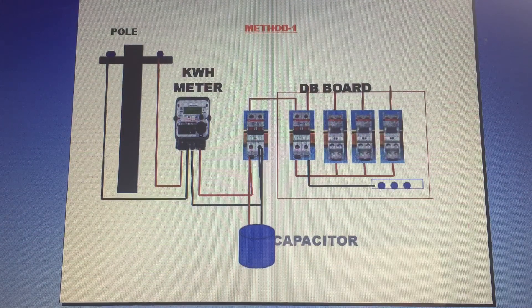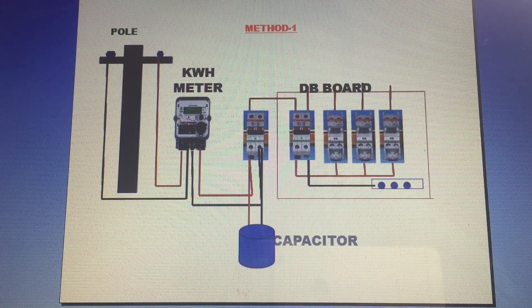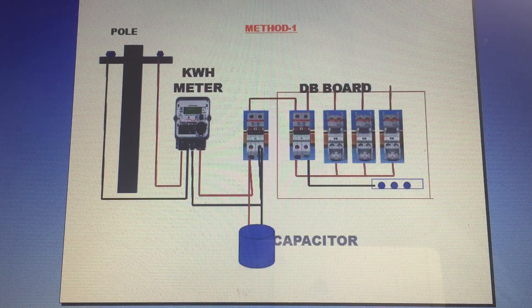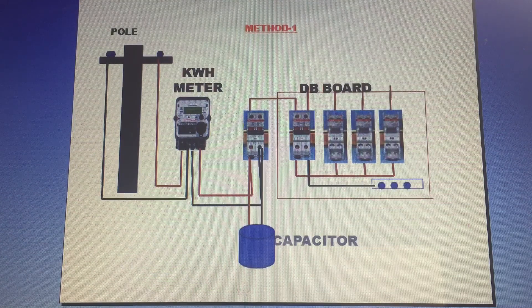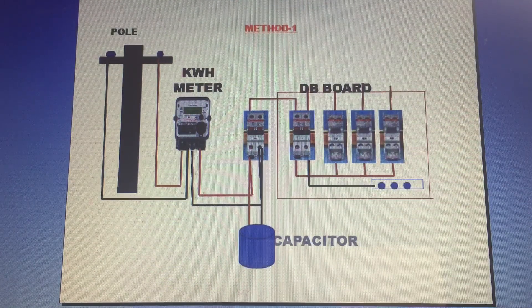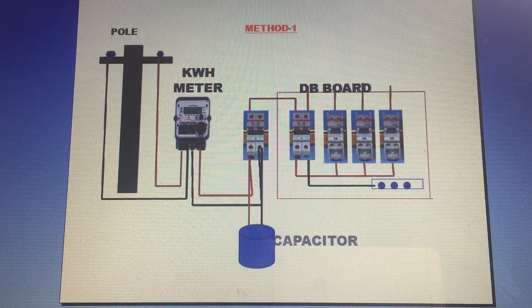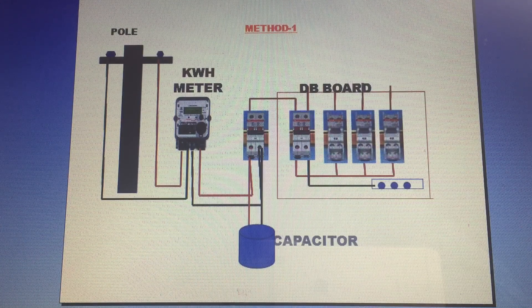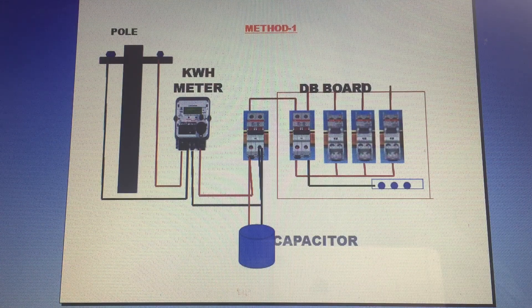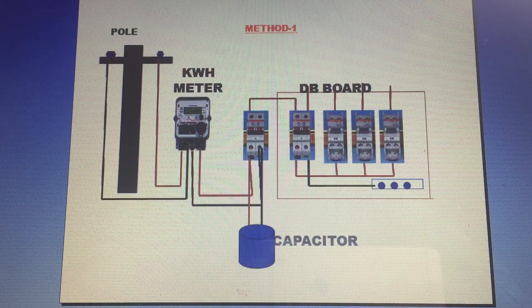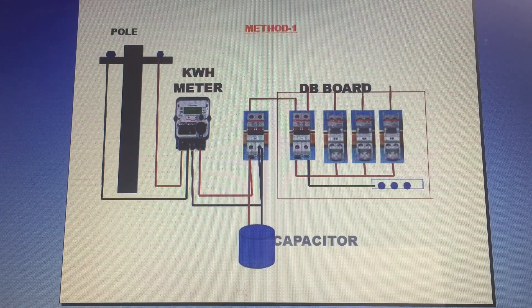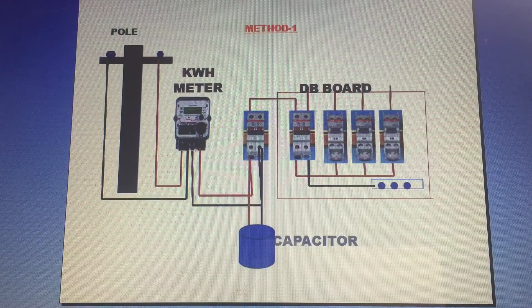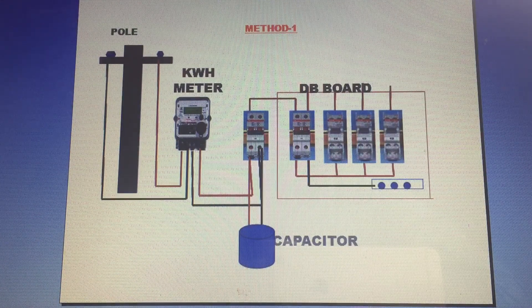Method 1: There is a straight light pole with a kilowatt meter and energy meter. The energy meter has four terminals for incoming and outgoing connections. In the incoming phase neutral and outgoing phase neutral, connect to the DB board and MCB. Now the capacitor connects to the phase neutral, going directly to the MCB, then to the DB board.